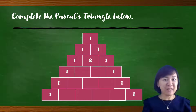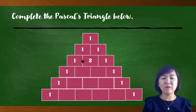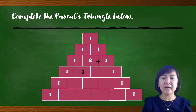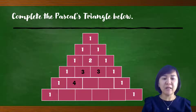Let's practice to complete the Pascal's Triangle. To get the fourth row, we add numbers from the previous row: 1 plus 2 gives 3, and 2 plus 1 gives 3. For the following row: 1 plus 3 gives 4, 3 plus 3 gives 6, and 3 plus 1 gives 4.